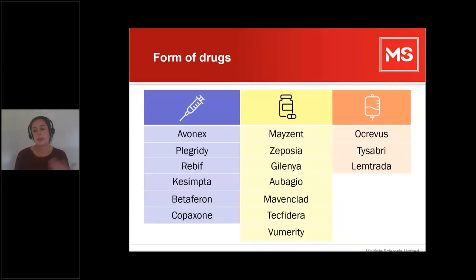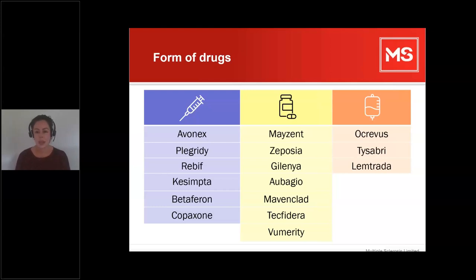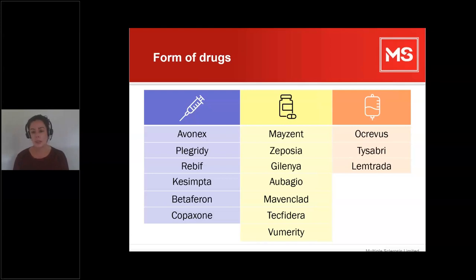There are 16 DMTs, given in three main forms. Self-injectable drugs — which you give yourself, most commonly at home, occasionally with help from a family member or carer. Oral medications taken as tablets or capsules. And infusions given in hospital — though in recent years there's been an option for some people to have Ocrevus and Tysabri as infusions at home, subsidised by the drug company and private health insurance, but the vast majority will have them in hospital.